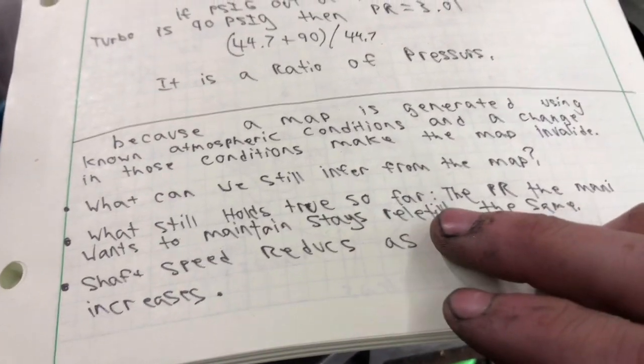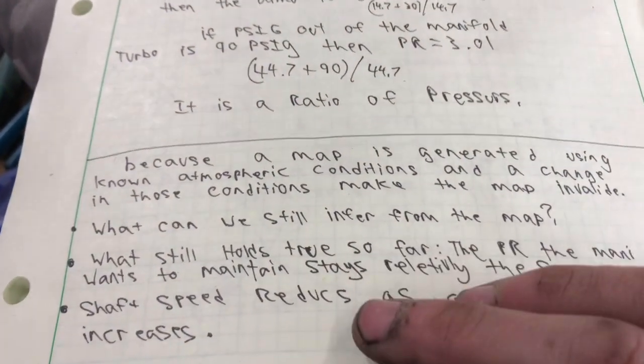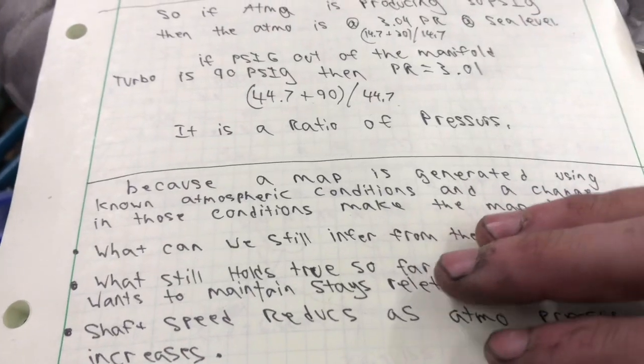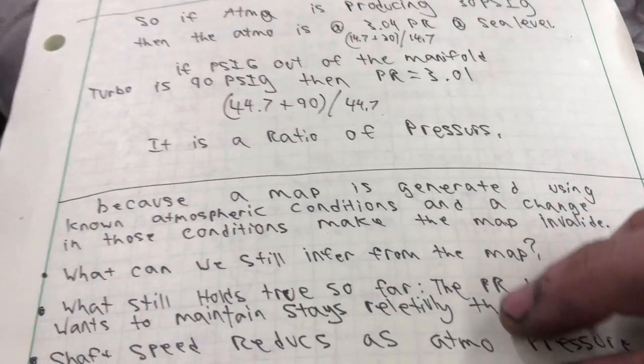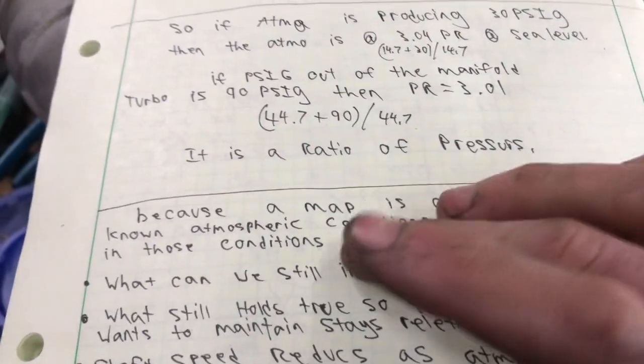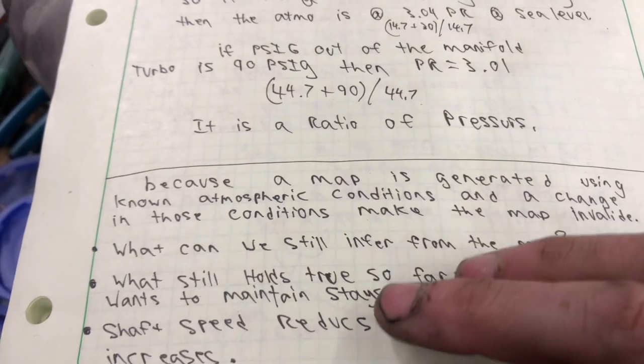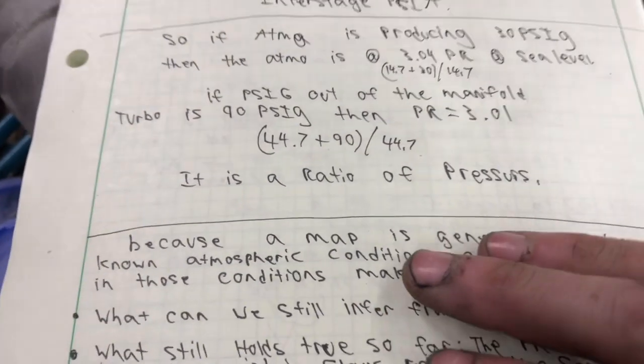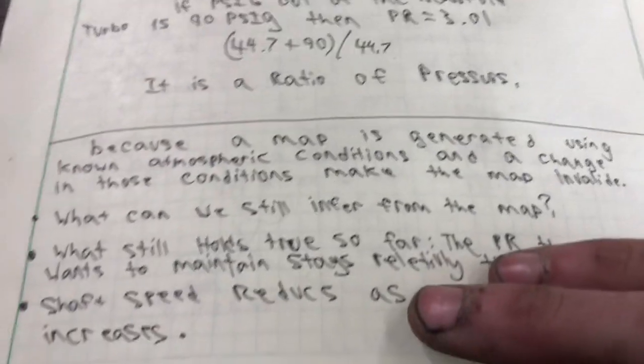Because a map is generated using known atmospheric conditions, and a change in those conditions make the map invalid. It's true. But can we still infer from the map? What still holds true so far is the pressure ratio the manifold turbocharger wants to maintain. So the pressure ratio where your drive to boost is the best stays about the same with the turbo in compounds or as a single. And that's because the air speeds don't really change. Just the amount flowing through it increases substantially in some cases. But the pressure ratio that the manifold turbocharger wants to run is the same. They have like a stock engine. They like to run like, you know, 2.0 to, you know, about 2.4 or 2.5. Or it's not 2.0. I would say 2.2 is factory. So let's just use 2.2 to 2.7. You would want to try and maintain that same pressure ratio with the manifold turbocharger with the compounds.